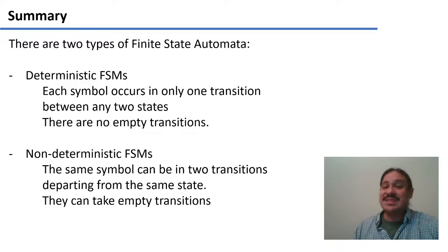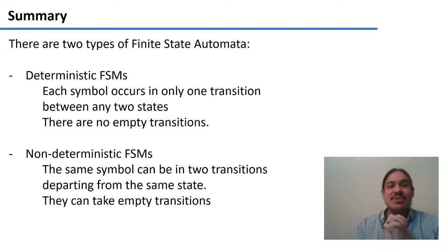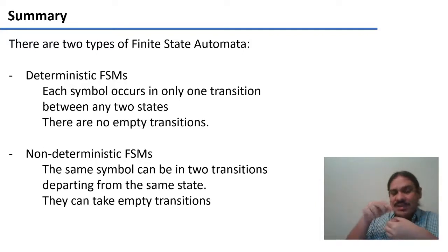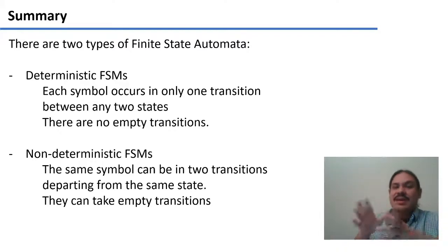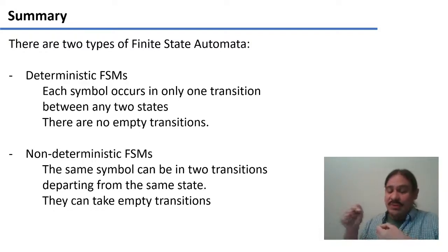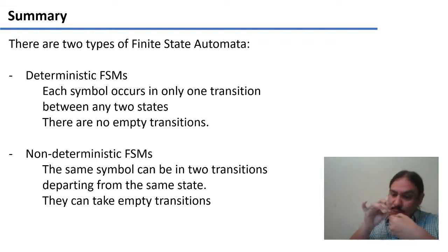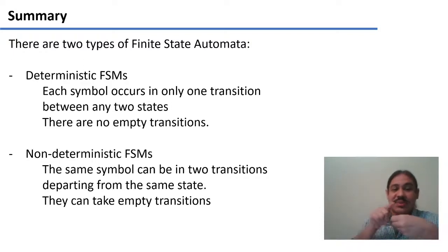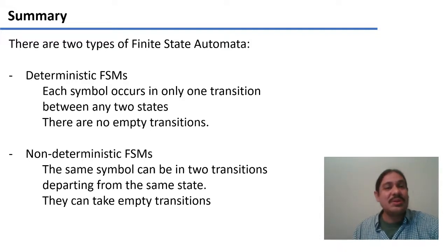In summary, there are many types of automata and one type is the finite state machine, of which there are two kinds. Deterministic finite state machines have only one transition out of any state for a given input symbol, and no empty transitions. A non-deterministic finite state machine can have more than one transition from the same state on the same input, and can also take empty epsilon transitions. We are going to look at more types of automata when we talk about the Chomsky hierarchy.